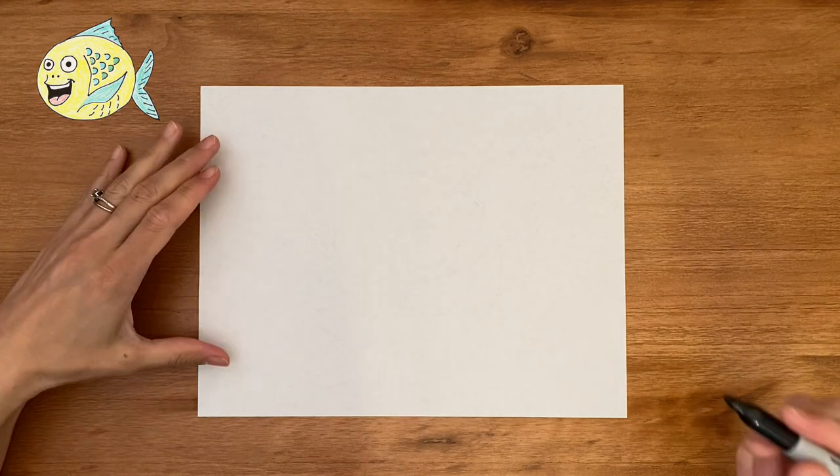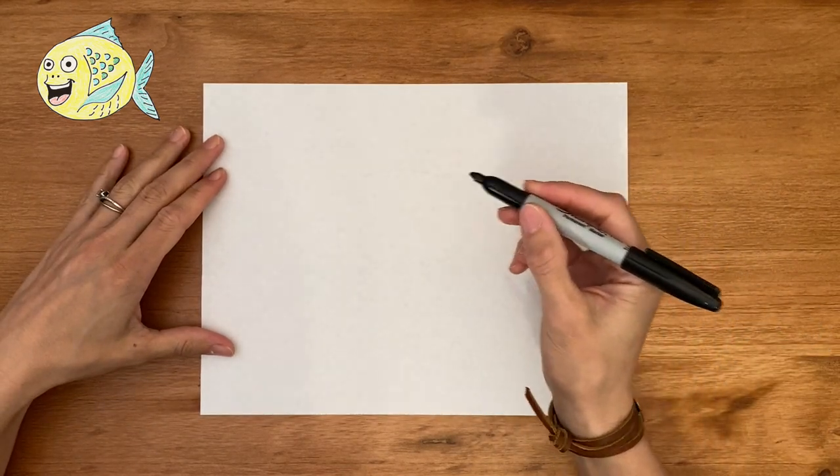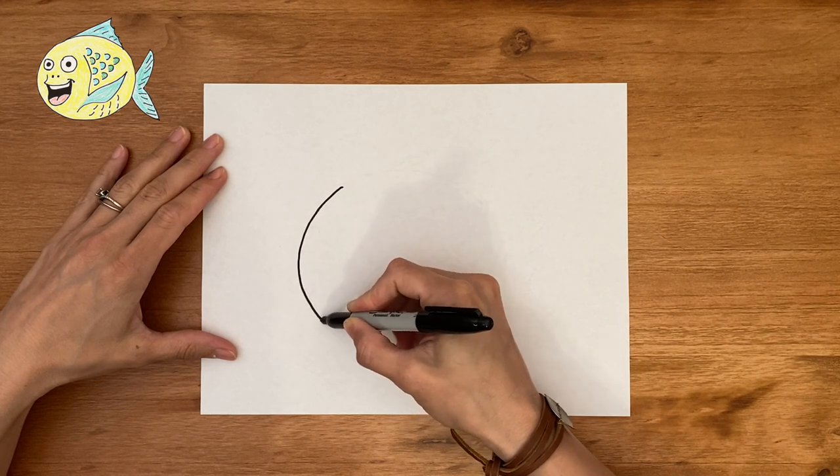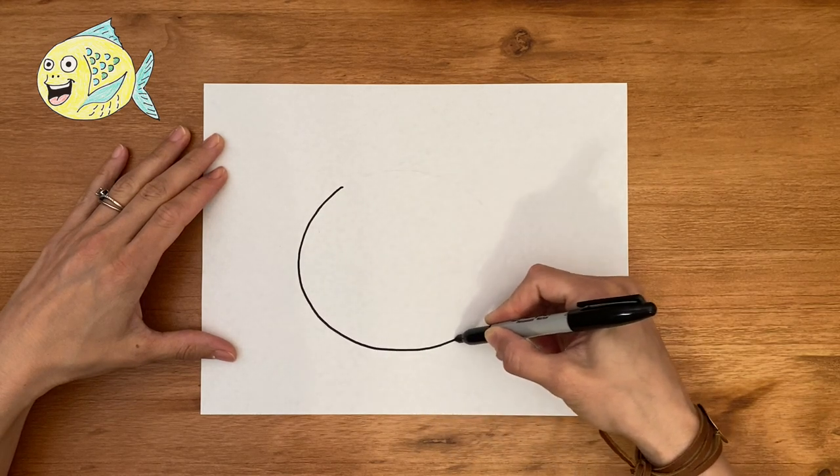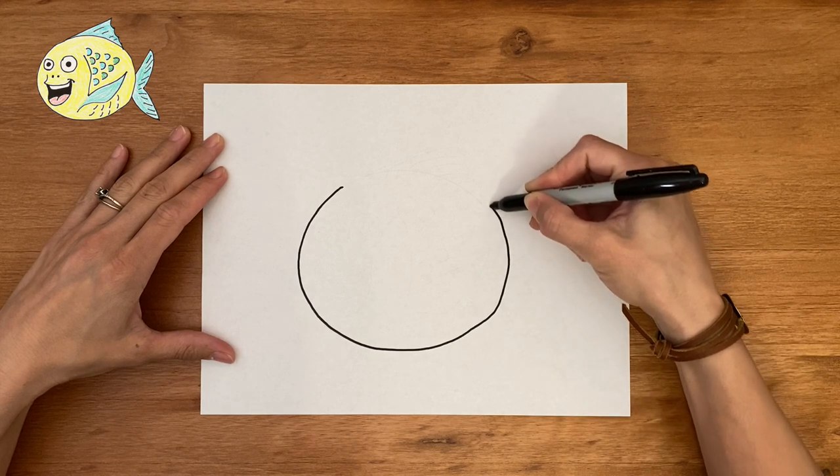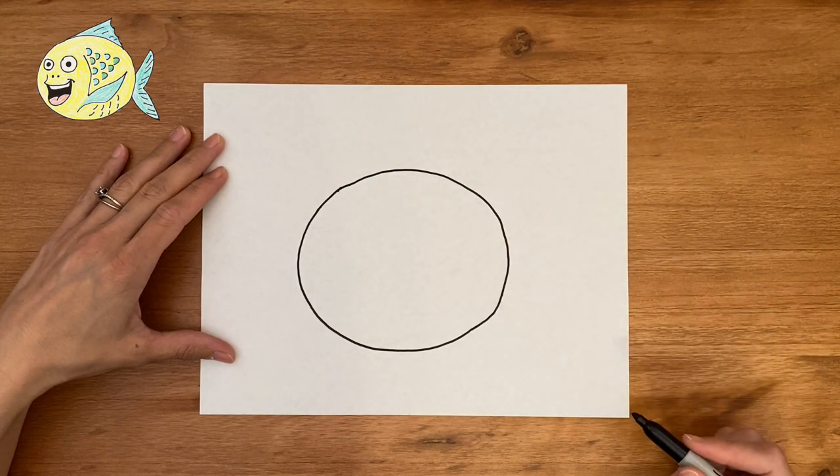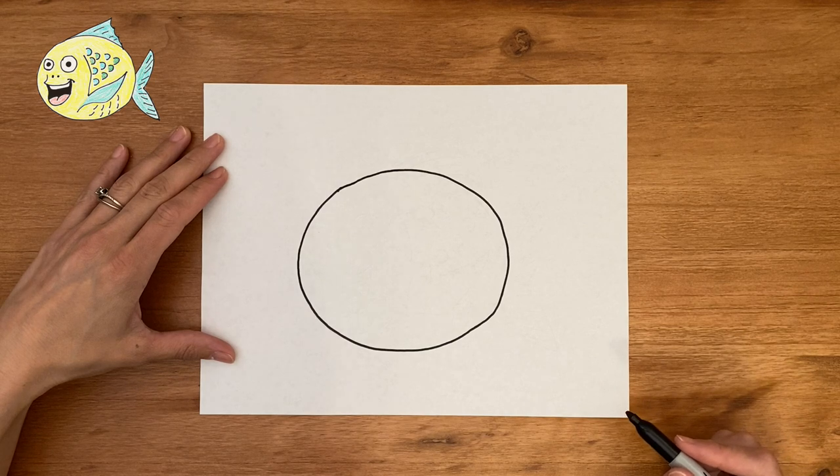So first we're going to draw the body of the fish. Let's make one big circle. Start at the top, make your way down and up to connect at the top there. There we go. Doesn't need to be perfect, but there's our body.